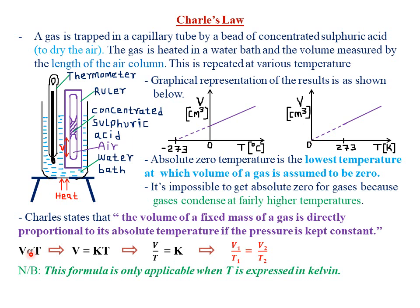To remove the proportionality symbol, we introduce an equal sign with a constant k, giving us V = kT. Making k the subject of the formula by dividing both sides by T gives us V/T = k, where k is a constant representing the pressure kept constant under Charles Law. Since V/T equals a constant, if you take the ratio of volume and temperature at any given point, it must be equal at different points. This gives us the formula: V₁/T₁ = V₂/T₂. A key point to note is that this formula is only applicable when temperature T is expressed in Kelvin, because Charles Law refers to absolute temperature.